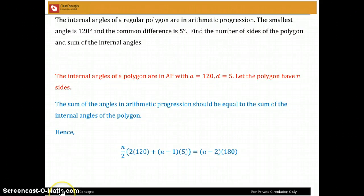Okay, Jishnu, you had asked me a question about this problem. The internal angles of a regular polygon are in arithmetic progression. The smallest angle is 120 degrees and the common difference is 5 degrees. Find the number of sides of the polygon and the sum of the internal angles.